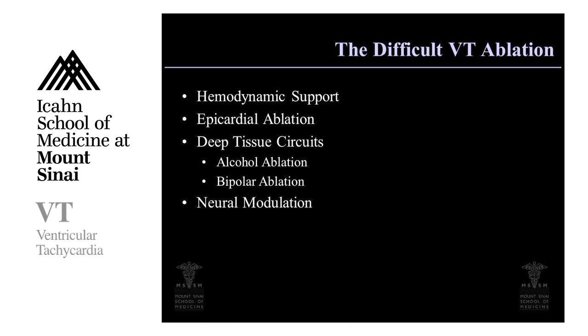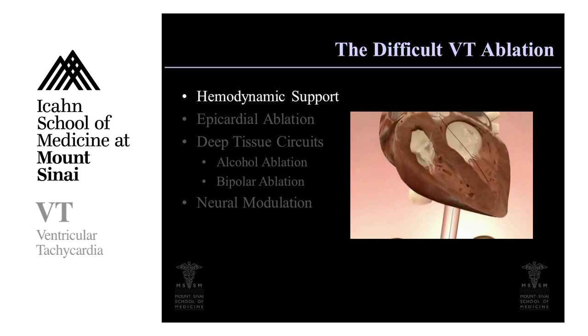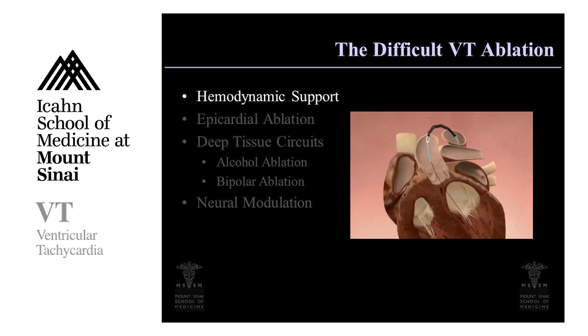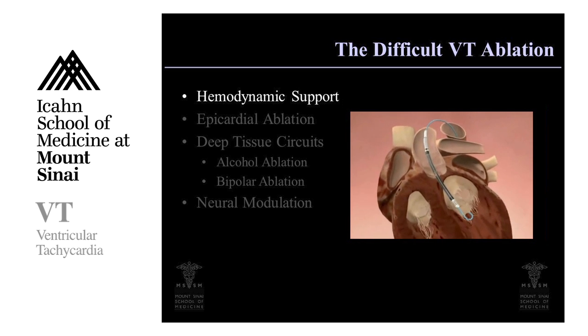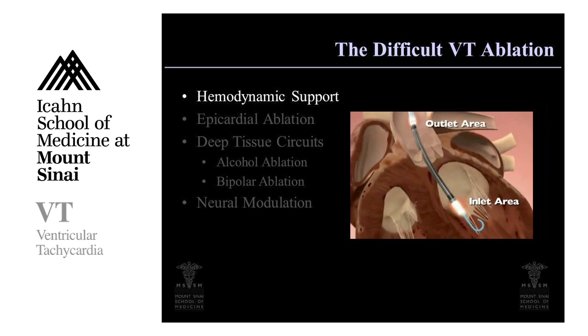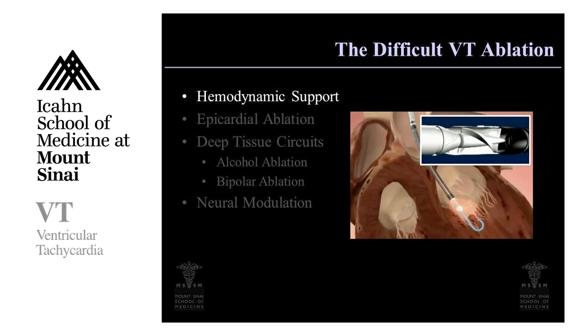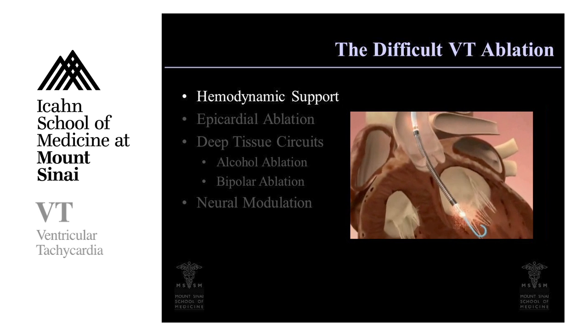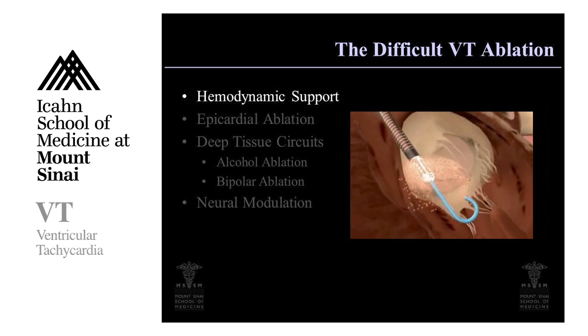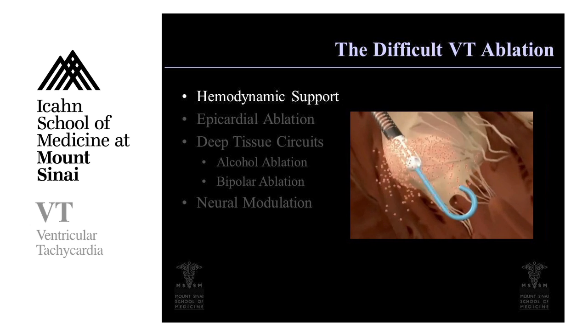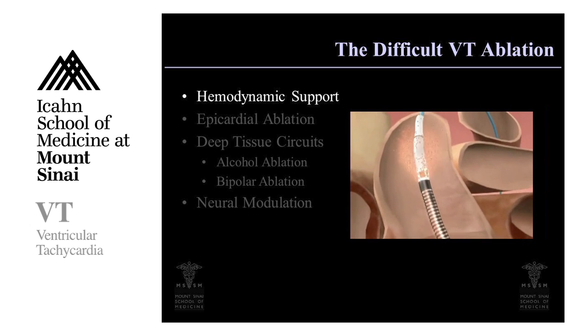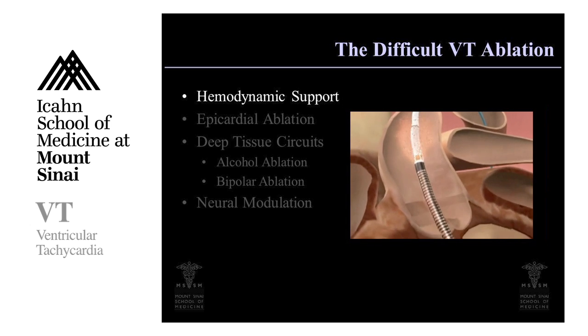In some patients, ablation can be difficult, so I'll go through some of the advanced approaches we use to treat difficult cases of ventricular tachycardia. The first approach is hemodynamic support. During tachycardia, the heart rate is going very fast and blood pressure is not well maintained. We use catheters that we can place into the heart — one such example is placed across the aortic valve, the main valve separating the heart from the rest of the body. This catheter has a pump inside that pushes blood from the heart into the bloodstream, augmenting the pumping ability of the heart. We use this during ablation procedures in patients with severe heart dysfunction or very fast tachycardias.